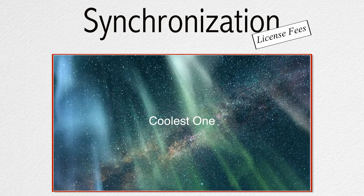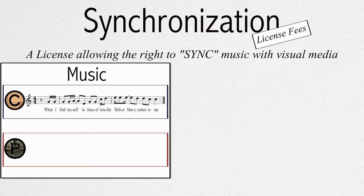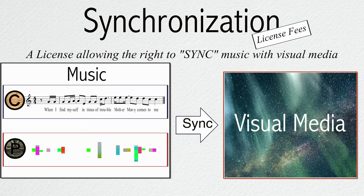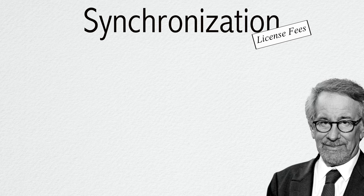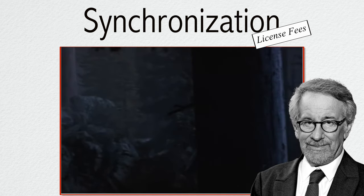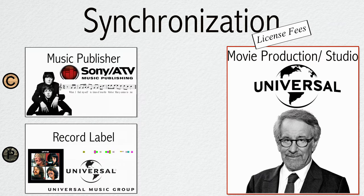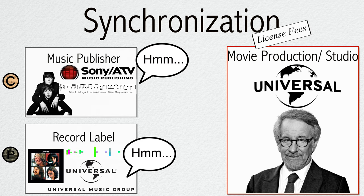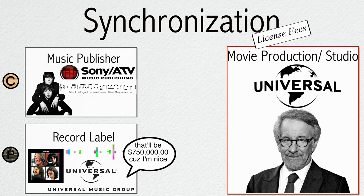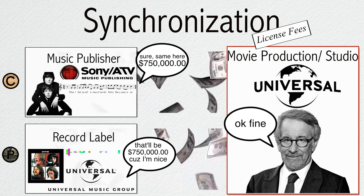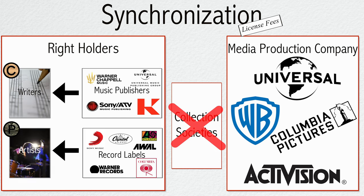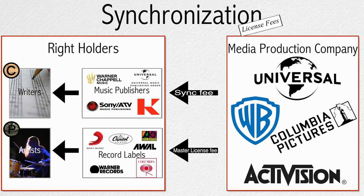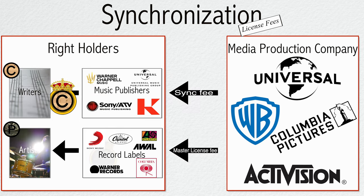Synchronization — also known as sync — is a license allowing the right to synchronize music with visual media: film, TV, video games, advertisements, etc. For example, let's say I'm Steven Spielberg making a new E.T. movie, and in the opening scene I want to sync "Let It Be." That is going to cost the movie production quite a lot, as these fees are quoted by publishers and labels, mostly based on the production's budget, importance of the music to the project, and iconicness of the song. A placement like this could generate hundreds of thousands to millions of dollars. As sync fees are much larger and rarer than other royalties, there is no need for a sync collection society — these licenses are negotiated and paid directly with the rights owners, the labels and publishers, then redistributed to the writers and artists based on their agreement.